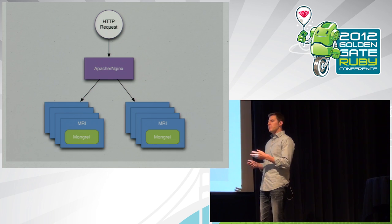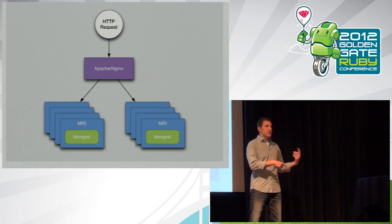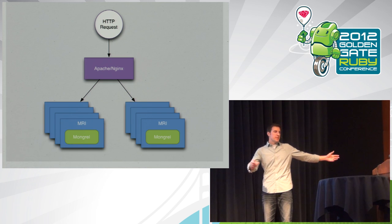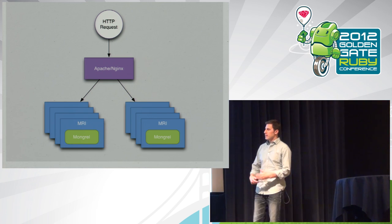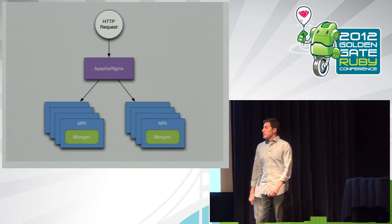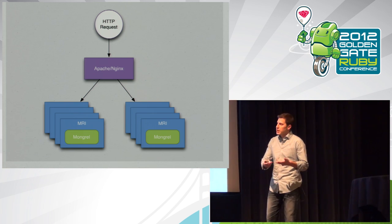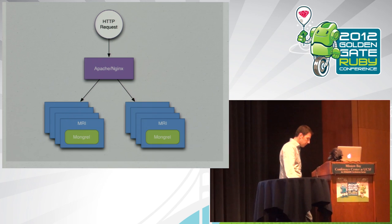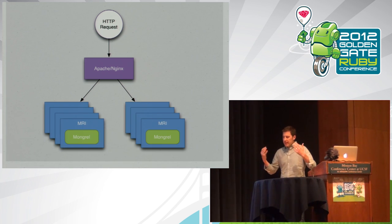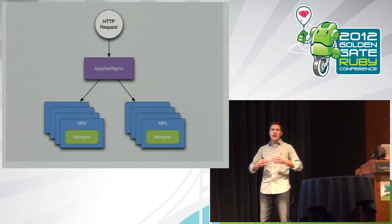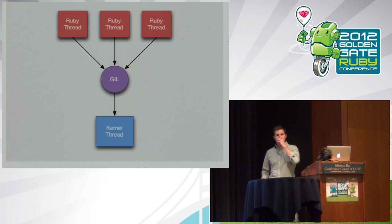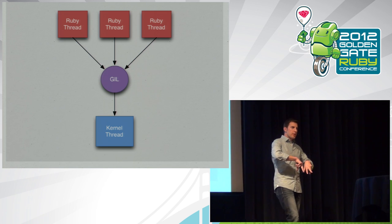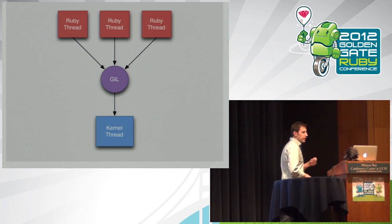Beyond those process management issues, there are other issues. We have to replicate session state across these processes, and each of these processes has its own database connection pool. Having an unbounded number of database connection pools defeats the purpose of having a cap on connections in your pool. So we introduce more infrastructure — like if you're using Postgres, you'd probably use PG Pool to put a layer between the application processes and the database so you don't blow out your connection limit.